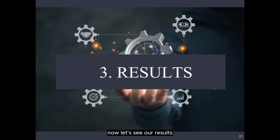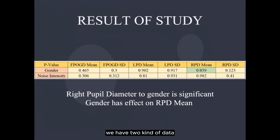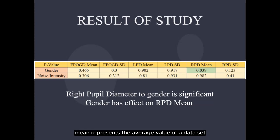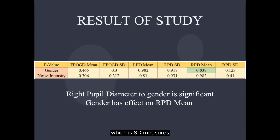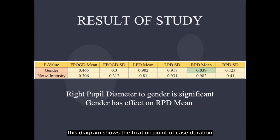Now let's see our results. We will explain each data point and whether it is significant or insignificant. We have two kinds of data: mean and SD. Mean represents the average value of a dataset indicating its central tendency, while standard deviation (SD) measures the spread or dispersion of values around this average. This diagram shows the fixation point of gaze duration.